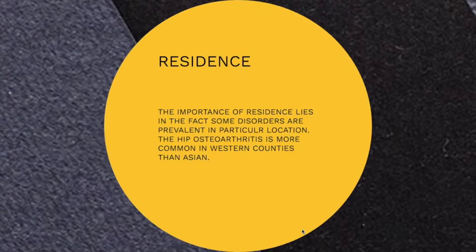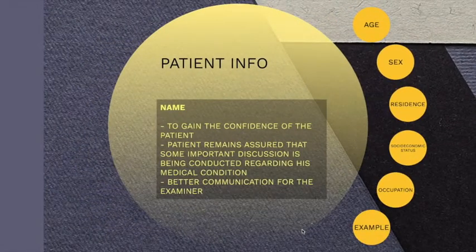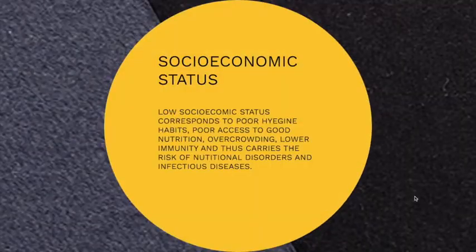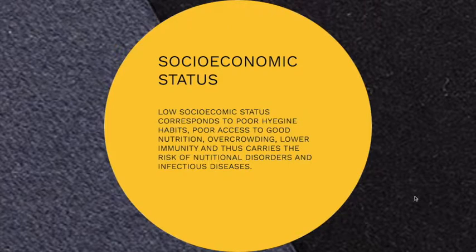You have to ask about the residence of the patient because some disorders are prevalent in a particular location. Hip osteoarthritis is more common in western countries than in Asian countries. In Asia, knee osteoarthritis is more common because low socioeconomic status corresponds to poor hygiene, poor access to good nutrition, overcrowding, lower immunity, and thus carries the risk of developing nutritional disorders as well as infectious diseases.